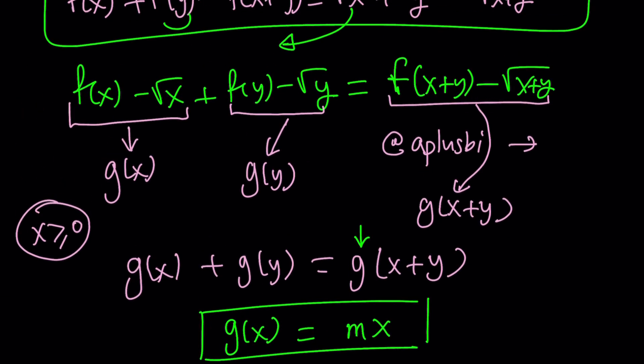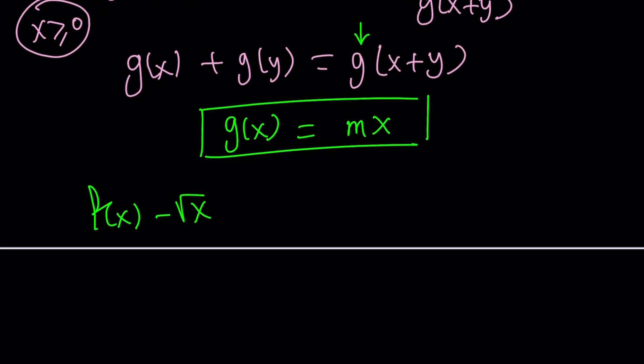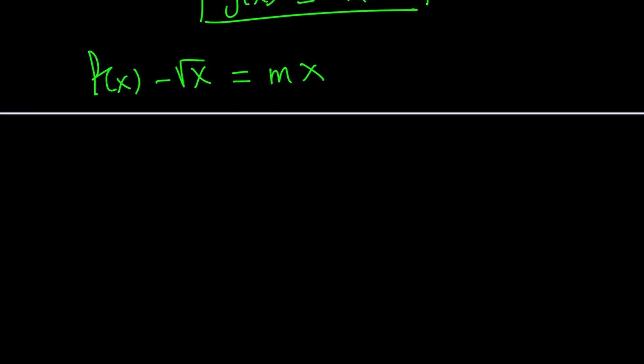And maybe, yes, it has to be real. So what does that mean? It means that f of x minus square root of x, which happens to be g of x, is equal to mx. Wow, that's amazing, isn't it? From here, we get f of x equals mx plus square root of x. Again, m is a real constant. It can be positive, negative, or 0. But of course, x values always need to be greater than or equal to 0. That's our domain.